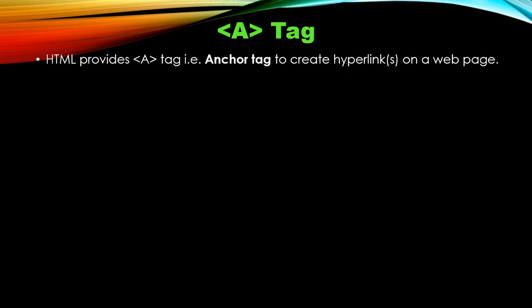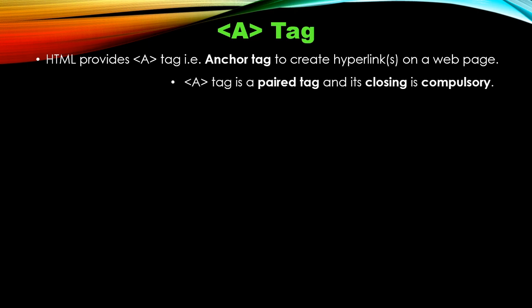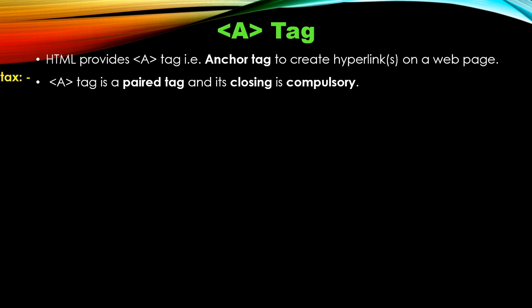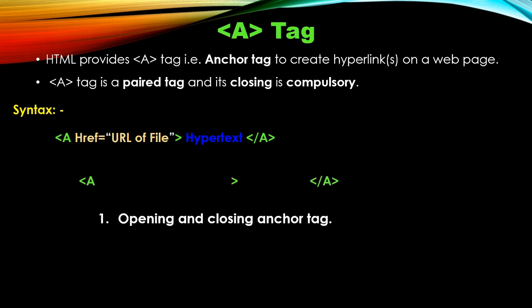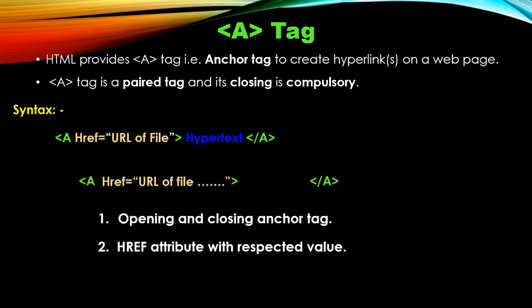Next is the anchor tag. HTML provides this anchor tag or 'a' tag to create hyperlinks on a web page. This tag is a paired tag and its closing is compulsory. The syntax of the anchor tag has three parts: the opening and closing anchor tag, the href attribute with its value (the URL of the file to link), and the hypertext — the clickable text shown to the user.